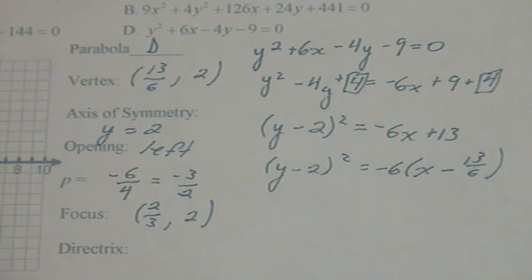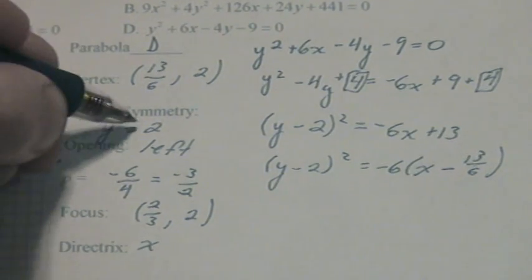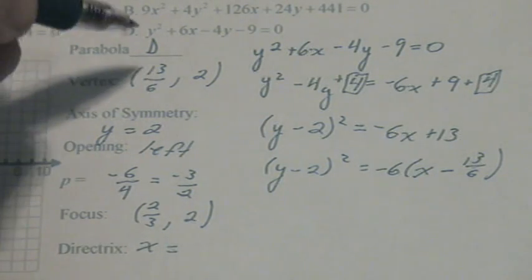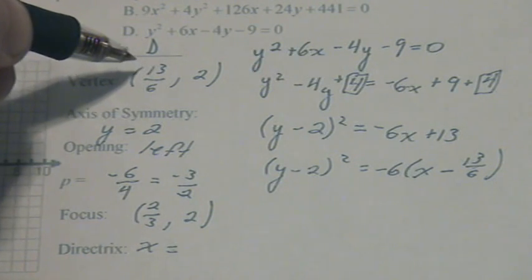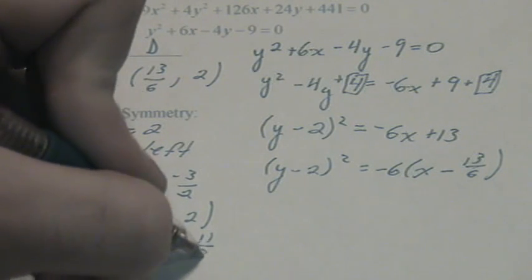And last is the directrix. Since we change the x here, we're going to change the x here. x equals. We're going to do 13 over 6 minus negative 3 halves, which gives us 11 thirds.